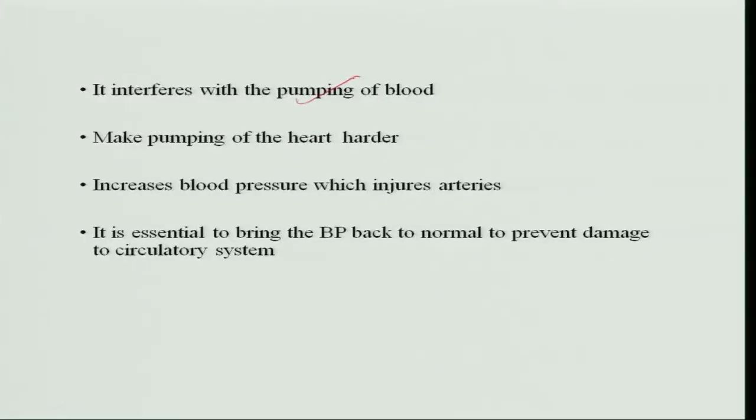The deposited material or plaque is soft but later becomes fibrosed or hard. In the initial stages the plaque can be easily dissolved, and this formation of plaque takes about 20 to 25 years — it starts forming right from childhood. If you have a good diet from childhood, atherosclerosis may be prevented. Once atherosclerosis is formed and becomes fibrosed or hard, it affects the pumping of the heart. The heart has to work harder to pump the blood, which increases blood pressure and injures the arteries.